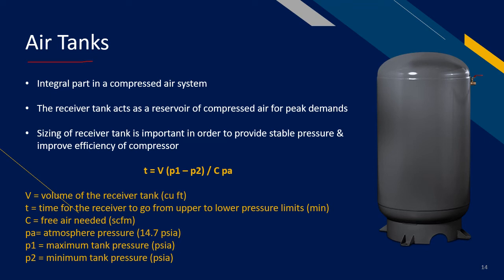On to our final component in the compressed air system: air tanks. Air tanks or air receivers are an integral part of a compressed air system. They act as a buffer between the compressor and the fluctuating pressure demand at the production site. The receiver tank handles these fluctuations in pressure. Proper sizing of the air tank is essential to provide stable pressure for the plant as well as to improve compressor efficiency.